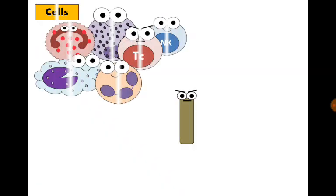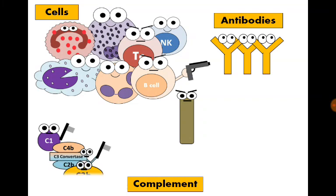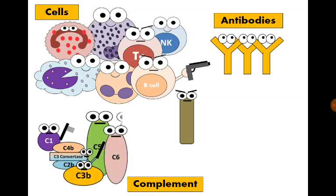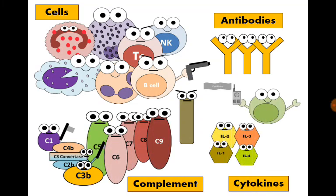The immune system is composed of many cells, antibodies, and humoral factors like the complement system and cytokines. Cytokines are the messengers connecting between the immune cells.